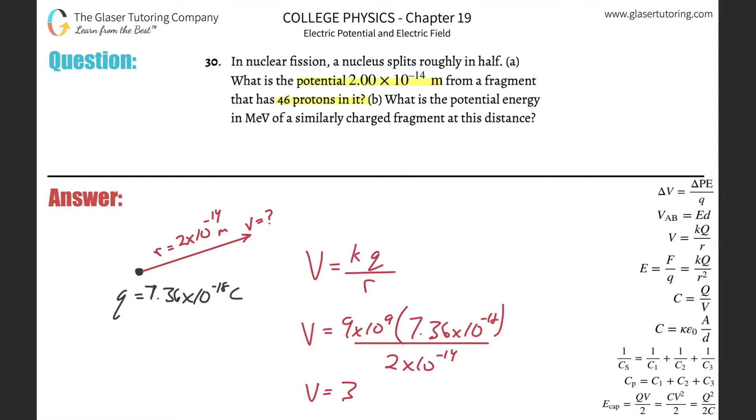So 3.31 times 10 to the, what do we got? 3, 6, 6. And that's going to be in terms of volts. All right. So that's the voltage.